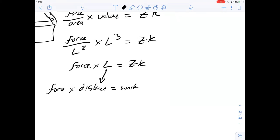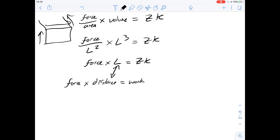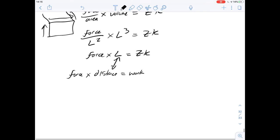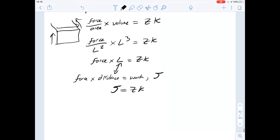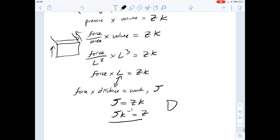So force times distance equals work, which is probably something you've seen before. Distance, of course, is measured in L, like this here. Okay. So then work is measured in joules, so we can replace the left-hand side of this equation with joules equals Z Kelvin. And if we take the Kelvin across to the other side, we get joules per Kelvin is the unit for Z, and that then gives us an answer of D for question 101.